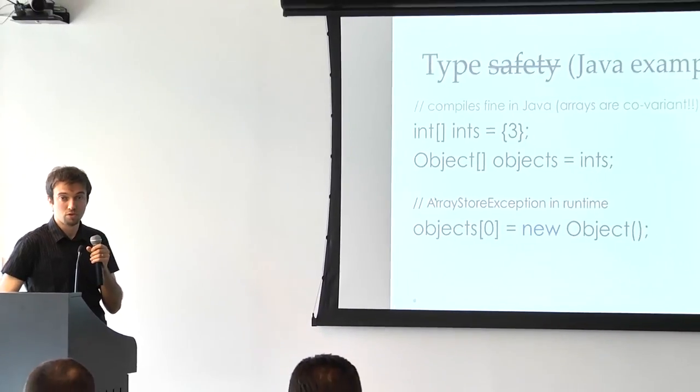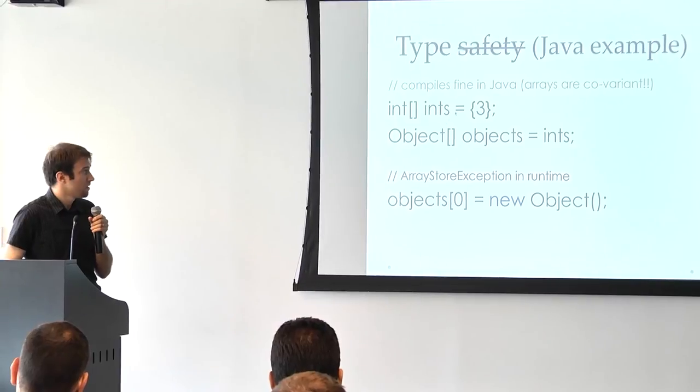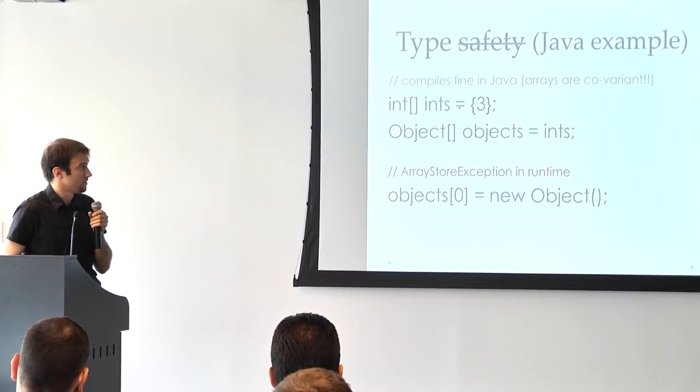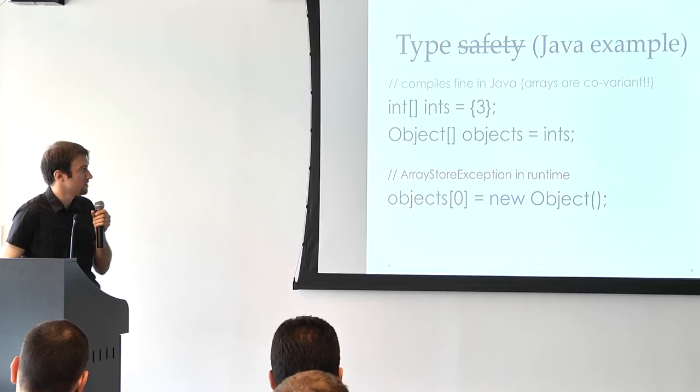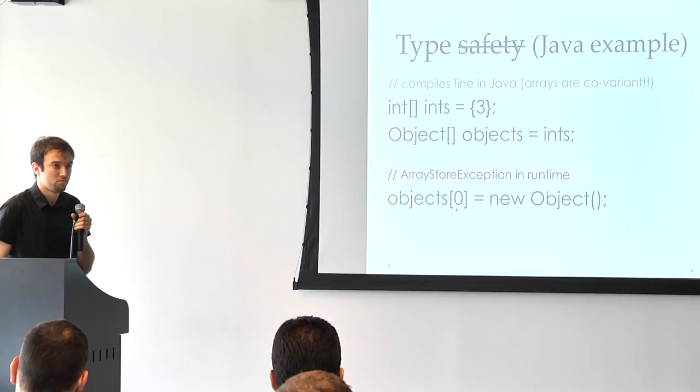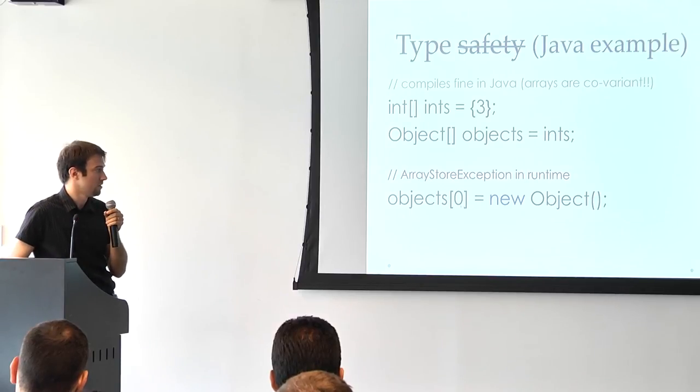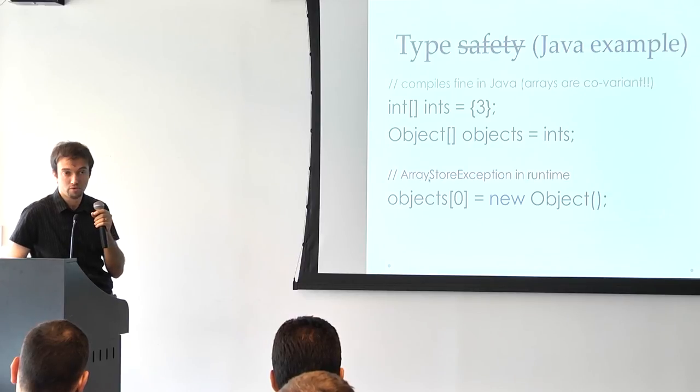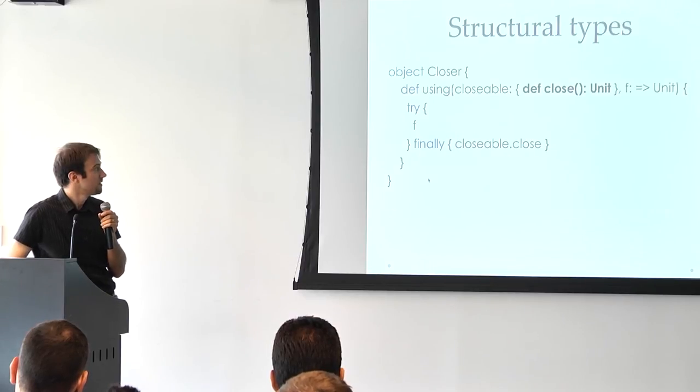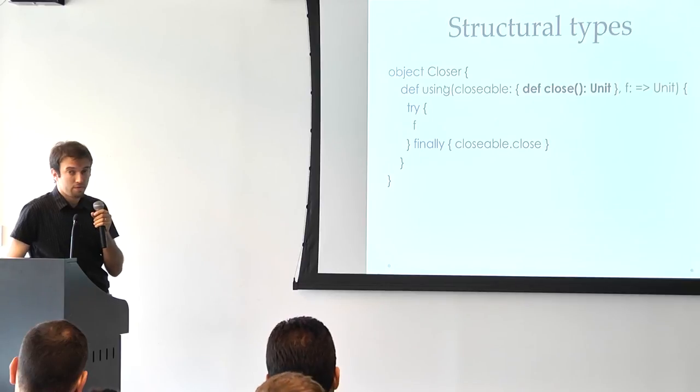So what else can we say about type safety? This is actually a simple example that will just crash a Java code in production and just will not compile in Scala. The reason is that arrays are covariant. So if we define an array of ints and basically assign it to an array of objects and then we want to set one of the cells there to be some object, we will get a runtime exception.